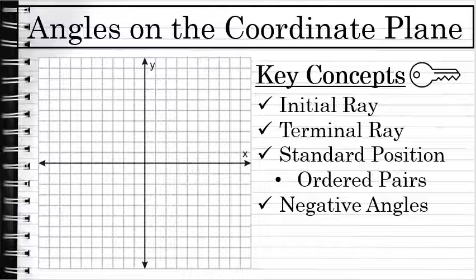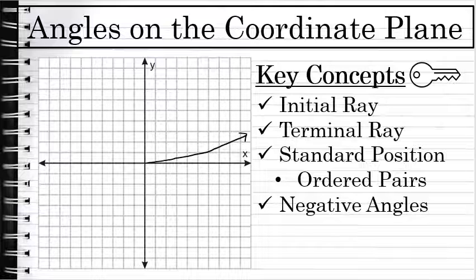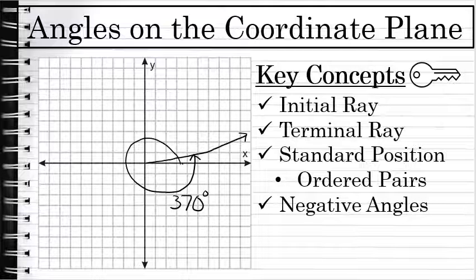When measuring angles on the coordinate plane, not only do negative angles make sense, but so do angles that are greater than 360 degrees. Measuring a 360-degree angle on the coordinate plane in standard position would look like a full loop — a 360-degree angle has the same initial ray and terminal ray. If I want to represent a 370-degree angle, the terminal ray would be exactly 10 degrees above the x-axis, but the notation shows the angle traveling all the way around. This is a representation of a 370-degree angle — assuming the distance from the x-axis up to the terminal ray is 10 degrees. Angles can be negative or greater than 360.